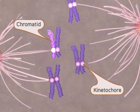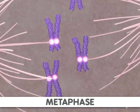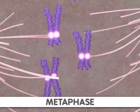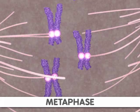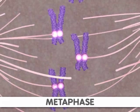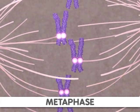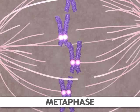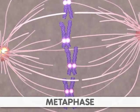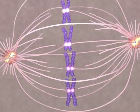Next comes metaphase. During this stage, the sister chromatids align along the center of the cell so that both chromatids face toward opposite poles of the cell. Now, the sister chromatids are ready to be separated.